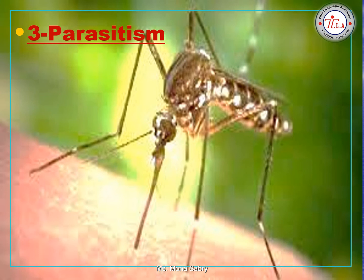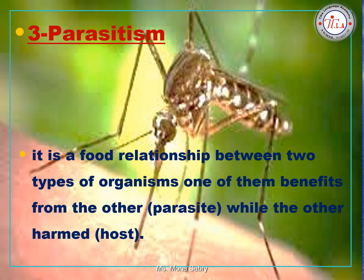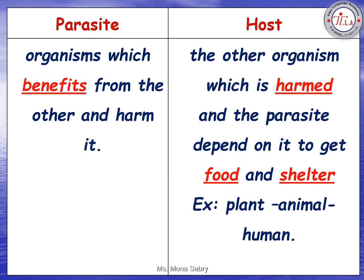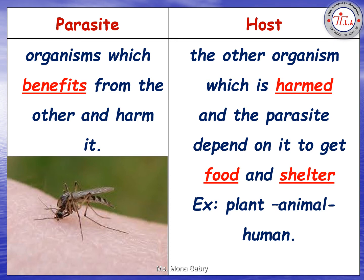The third type of symbiosis is parasitism. It is a food relationship between two types of organisms where one of them benefits from the other — called the parasite — while the other is harmed and is called the host. The parasite benefits from the host and causes harm to it, while the host is the organism the parasite depends on to get food and shelter, such as a plant, animal, or human.